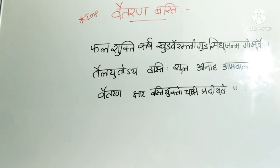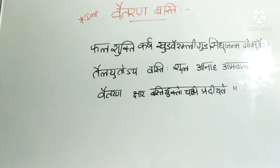The shloka is: Phalashukhti karsha kudavai ramli guda sindhu janma gomutraihi. This is the Sanskrit verse describing the composition of Vaitarana Basti.